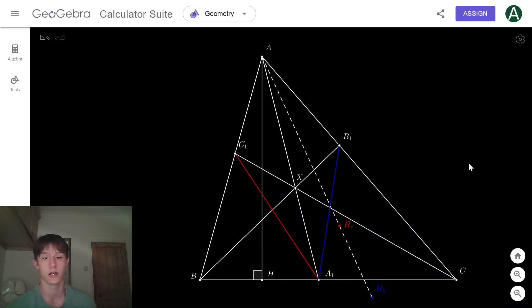Here's the problem statement: AA1, BB1, and CC1 are three Cevians that intersect in one point X, and AH is the height of triangle ABC. You reflect H about A1C1 and A1B1, which are the red and blue lines, and you get points Hr and Hb.